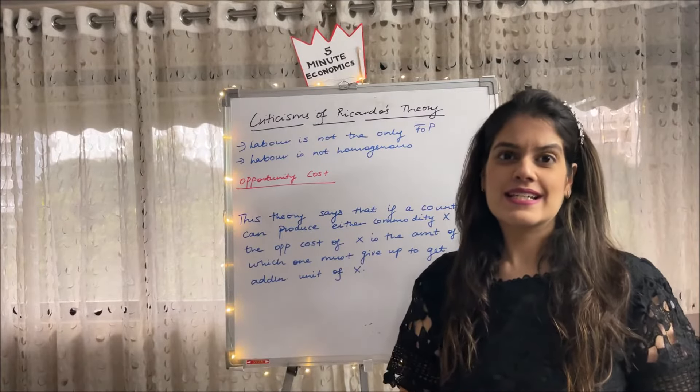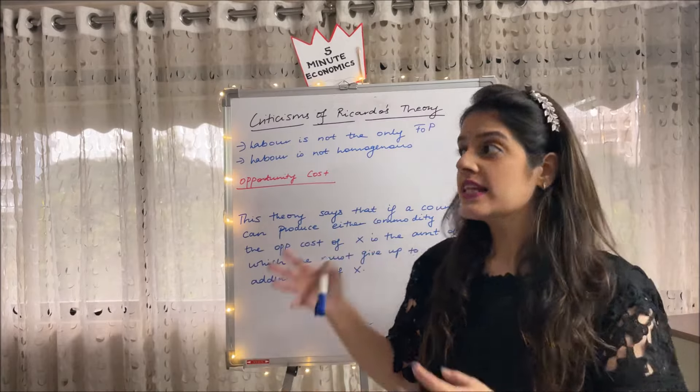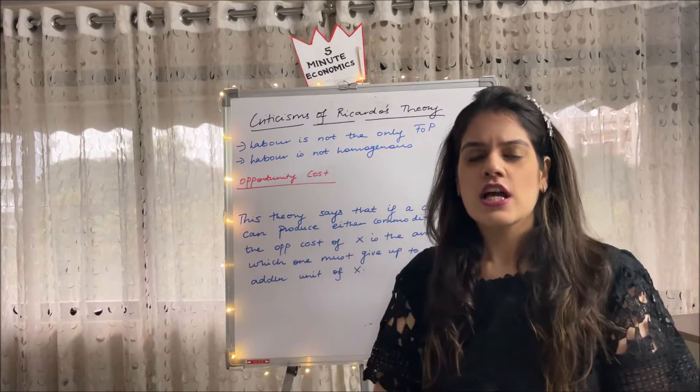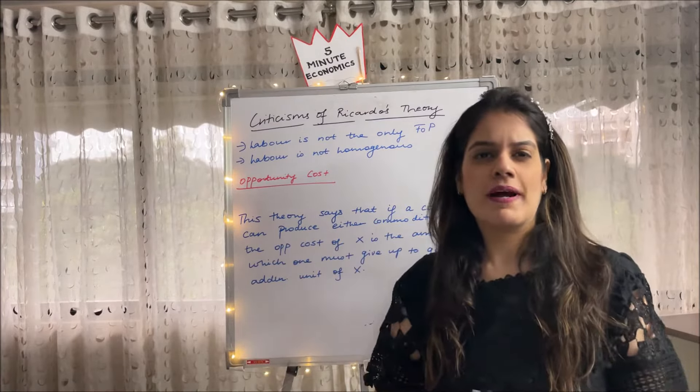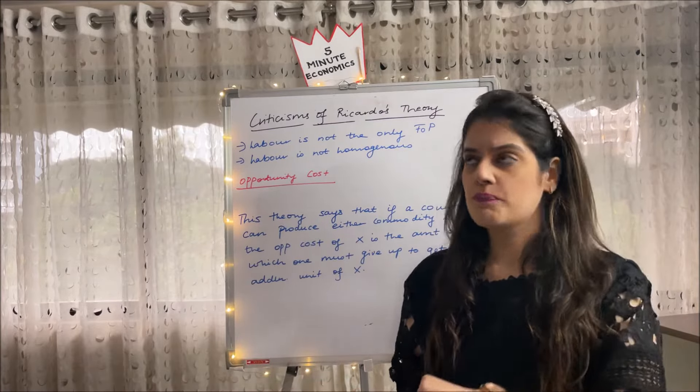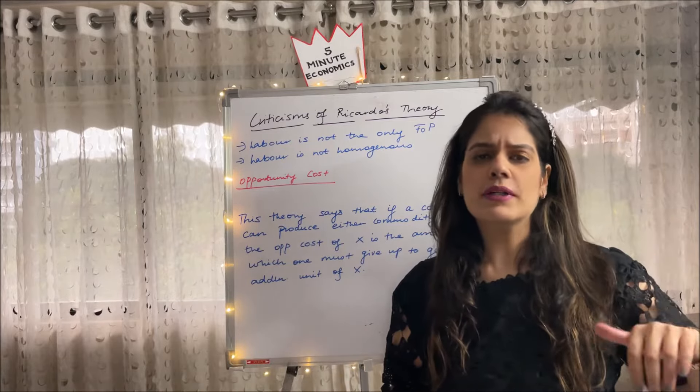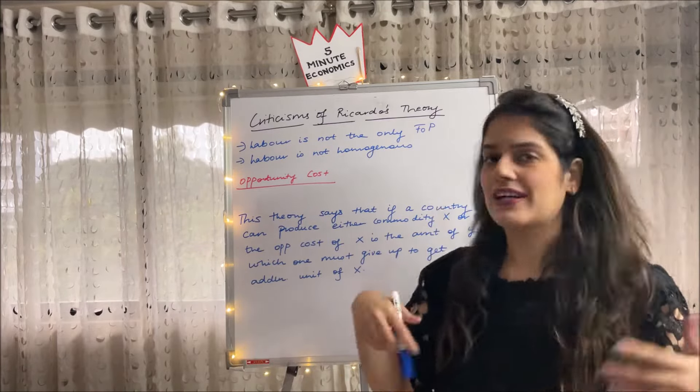So firstly, let us study the criticisms of Ricardo's theory, only after which this theory came into existence. I've already made a video on the comparative advantage theory by Ricardo and I'll attach the link in the comment section below. The number one shortcoming was that there we had assumed that labour is the only FOP. FOP is factors of production.